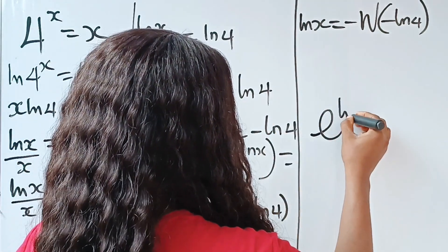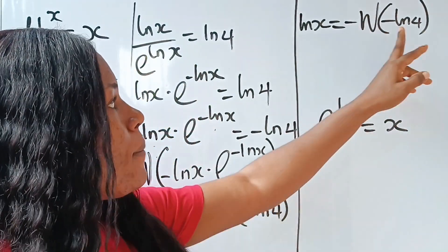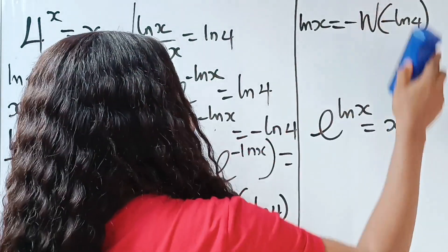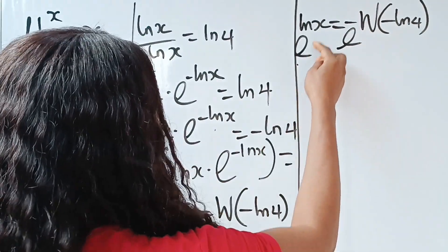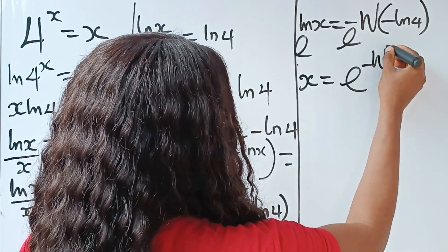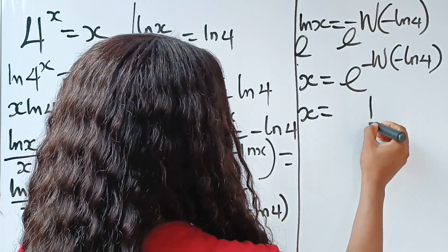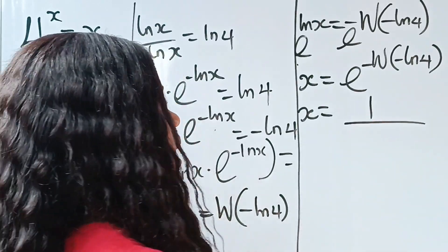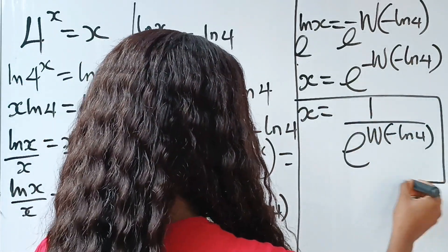Recall that e^(ln x) = x, so if we introduce e as the base on both sides, we get x = e^(−W(−ln 4)). We can also write this as x = 1/e^(W(−ln 4)).